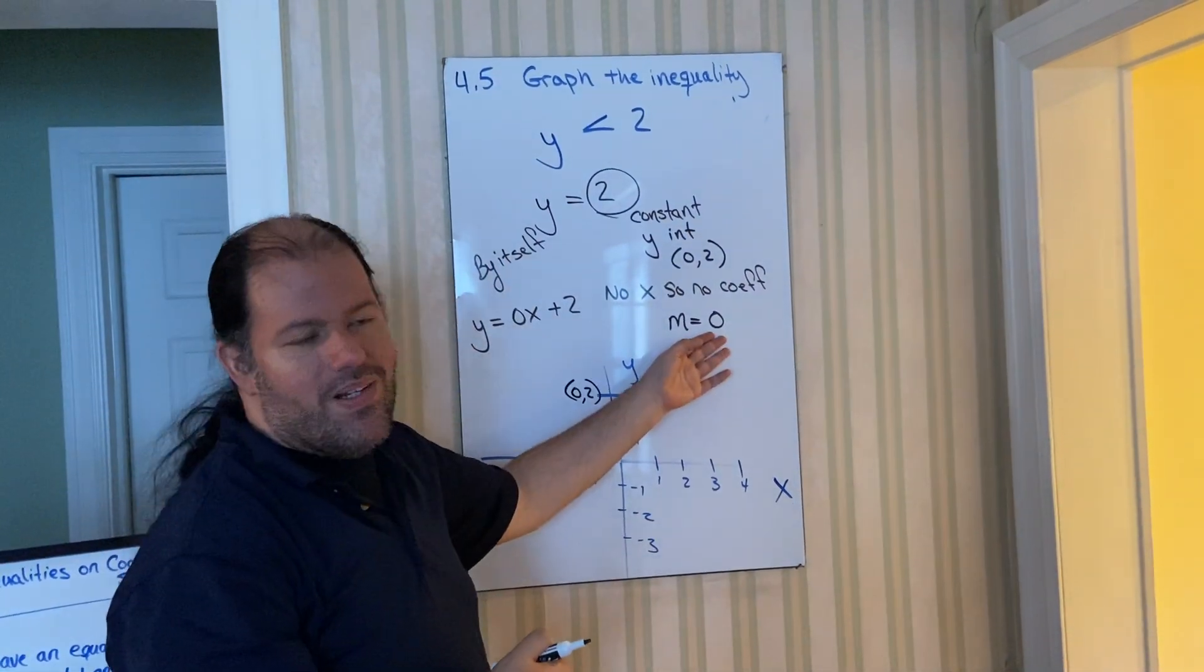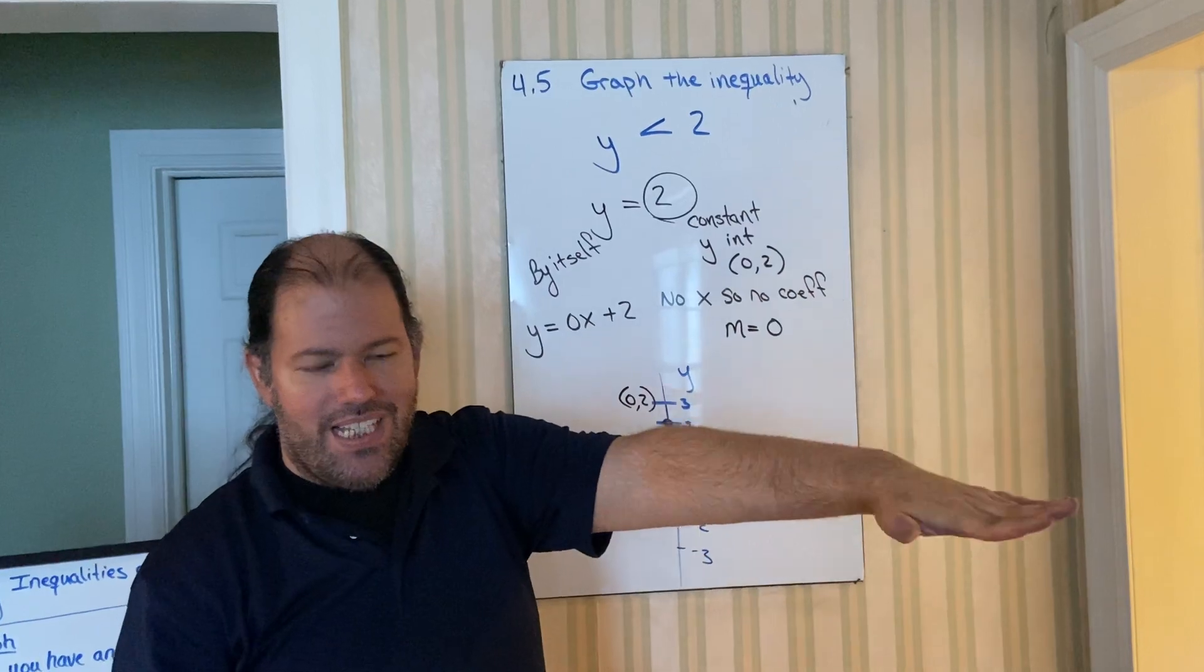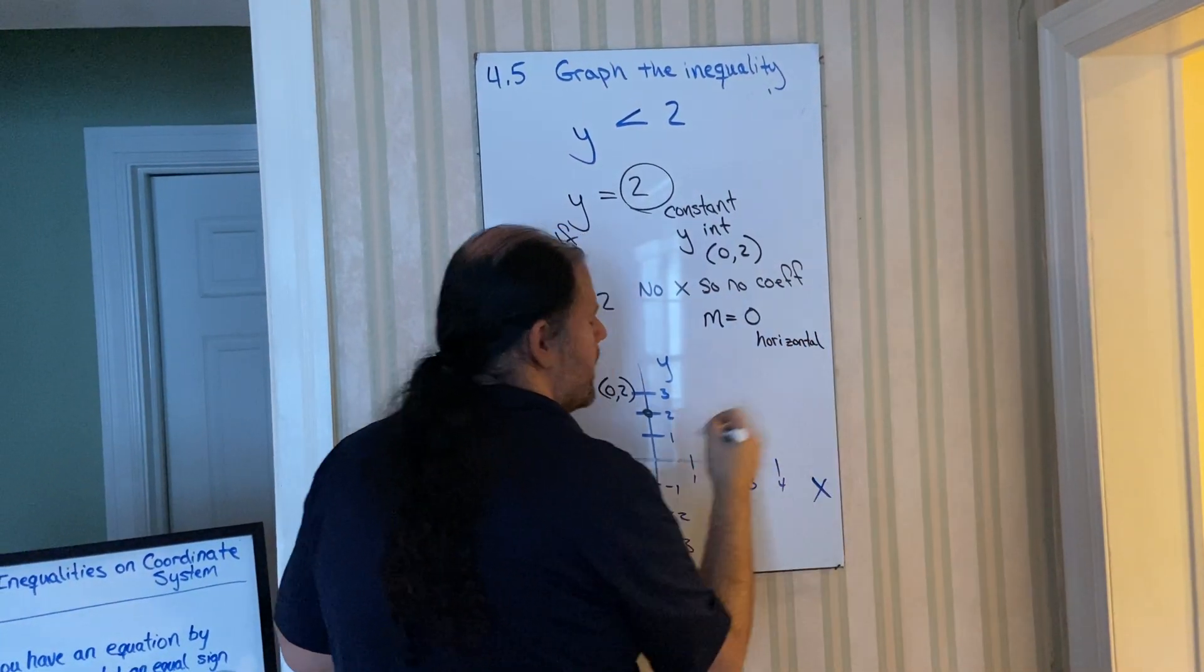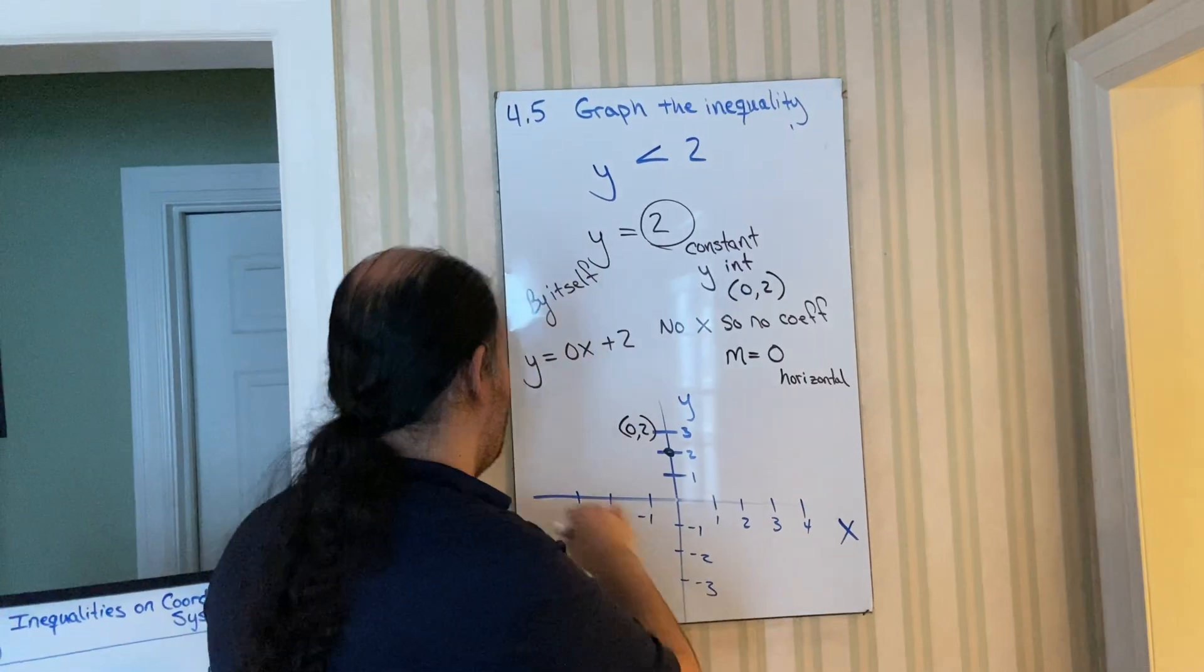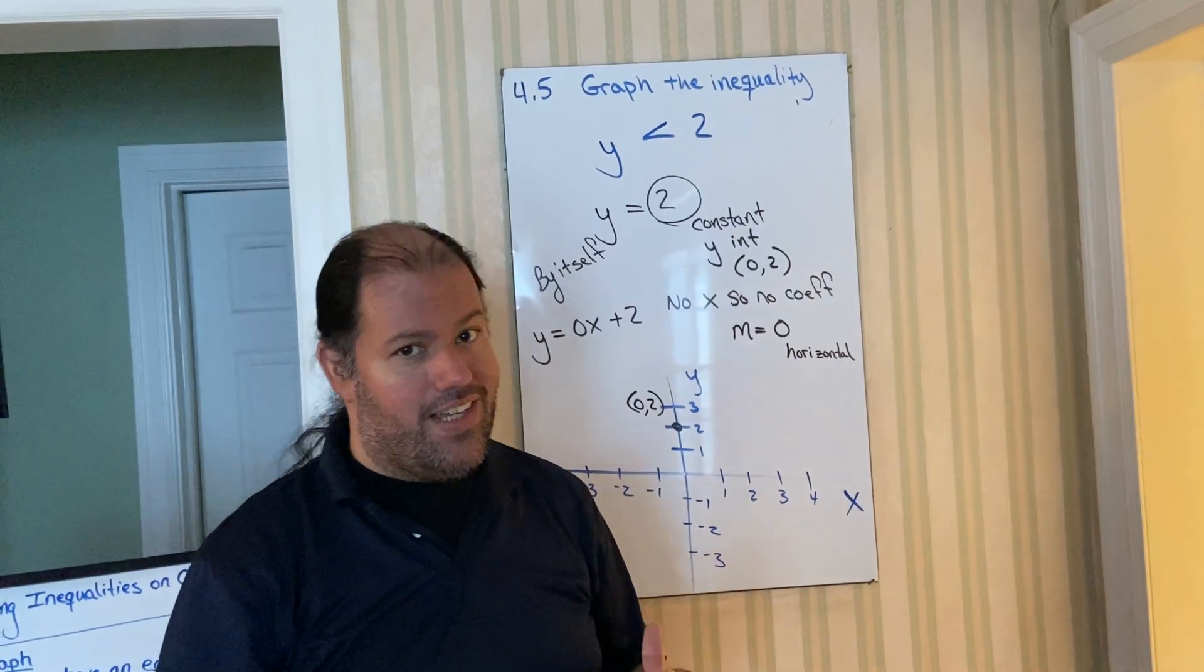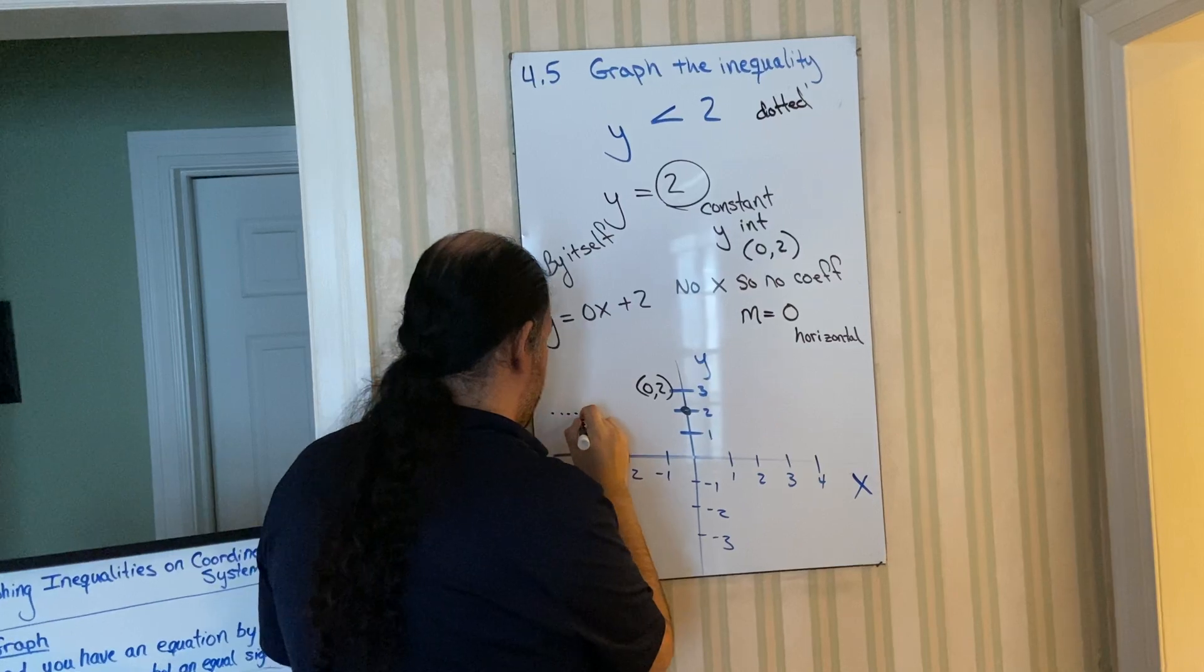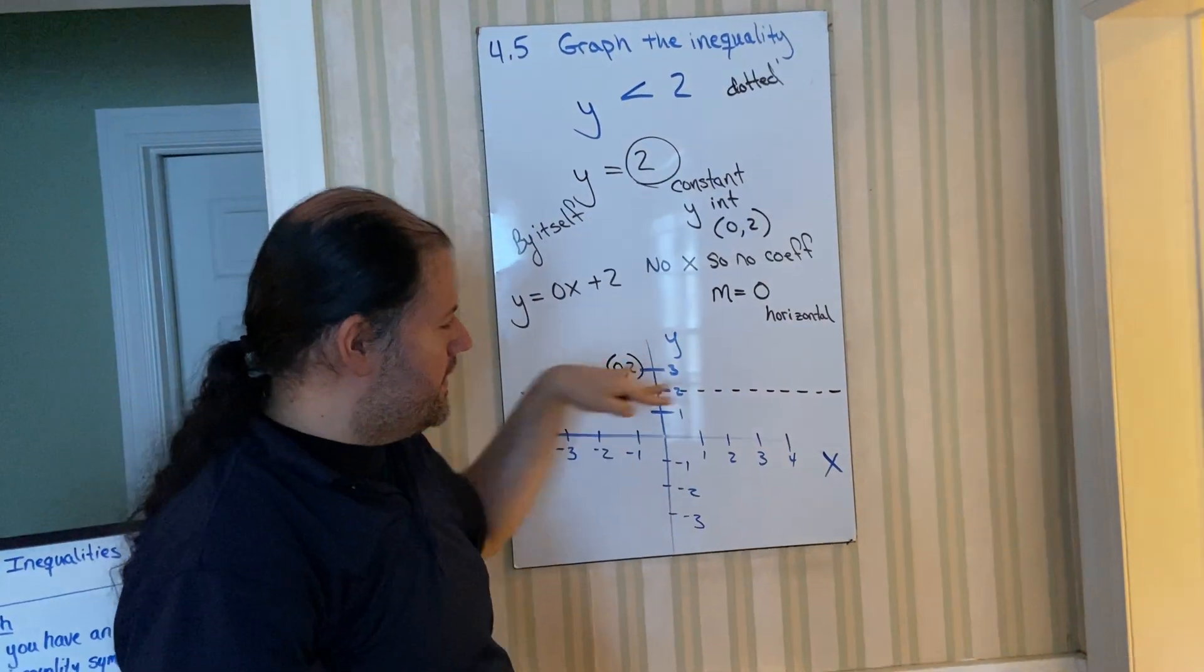Now some of you will remember, oh, remember the four pictures? When slope is zero, is that perfectly flat, horizontal line. So we can easily just draw a line that goes flat. But the question is, do we draw it as a solid or dotted? We're going to graph it as a dotted line.